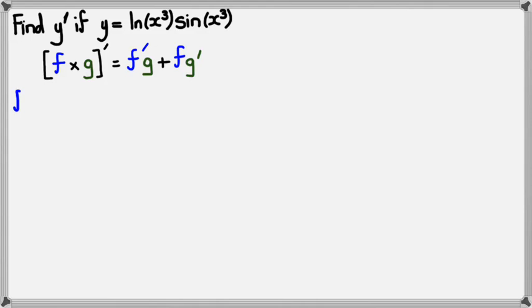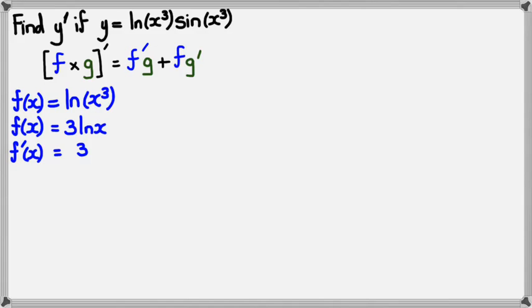And as usual, we're going to write f(x) first. So f(x) is equal to ln(x³). Now we know with log rules that if it's a power, we could bring the power up front. And bringing it will make it easier for us to differentiate because we can write f(x) as 3lnx. And of course, lnx differentiates to 1 over x, which means f'(x) is equal to 3 over x.